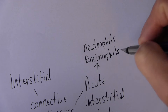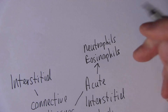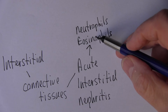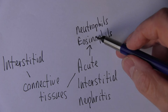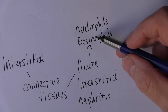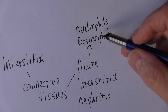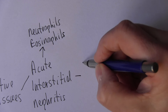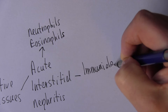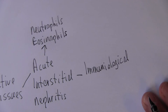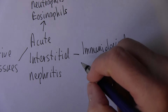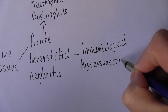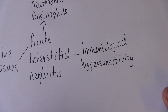Those are two of the granulocyte 'fills' — the only other one not mentioned is the basophils. These activated immune cells contain digestive enzymes which can be released into the tissues, causing destruction of the interstitial cells. This is an immunological reaction — an abnormal hypersensitivity type immune response that's not supposed to happen.